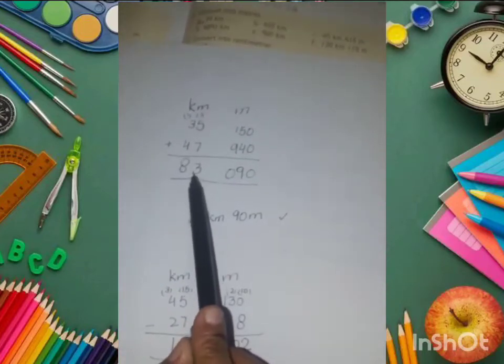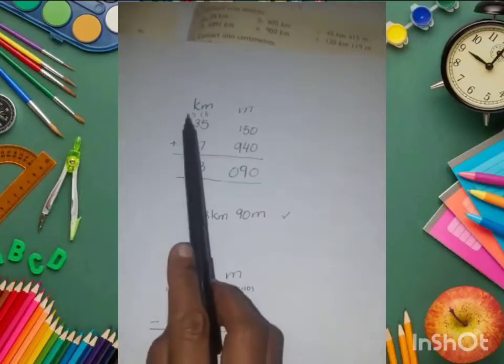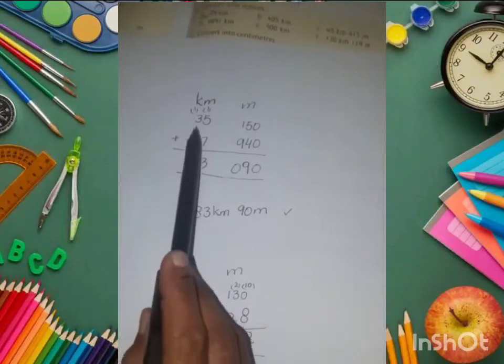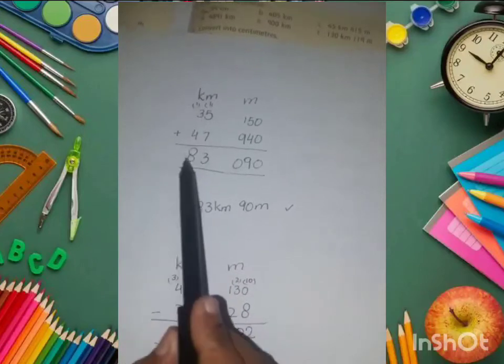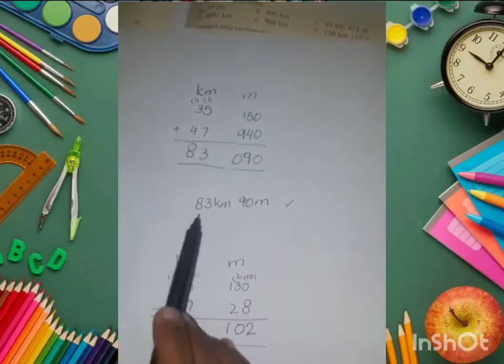We add 4 plus 3 plus 1, which equals 8. The answer is 83 kilometers 90 meters.